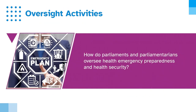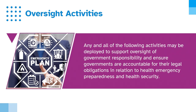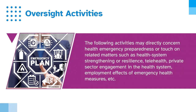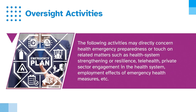How do parliaments and parliamentarians oversee health emergency preparedness and health security? Any and all of the following activities may be developed to support oversight of government responsibility and ensure governments are accountable for their legal obligations in relation to health emergency preparedness and health security. The following activities may directly concern health emergency preparedness or touch on related matters such as health system strengthening or resilience, telehealth, private sector engagement in the health system, employment effects of emergency health measures, etc.